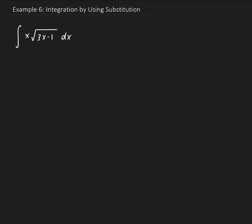In this example, we're going to integrate the function given here, which is x times the square root of 3x minus 1. To do this, it's a little tricky, but we're going to start by letting u be equal to 3x minus 1.